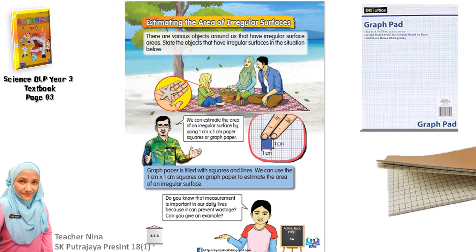So, now for irregular surface, the best we can do is actually we can only estimate. Okay, we can estimate the area of irregular surfaces. There are various objects around us that have irregular surface areas. Now, look at this picture. State the objects that have irregular surfaces in this situation below. So, by looking here, you can see it is focused on this girl's hand and on her hand is a nice starfish. So, this starfish has an irregular surface.